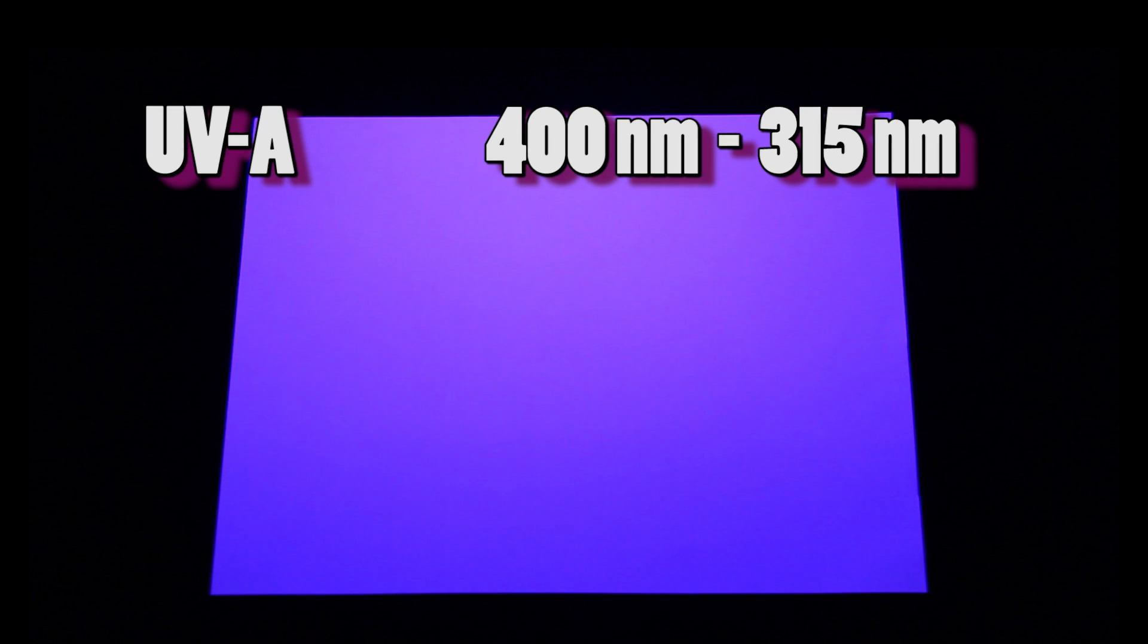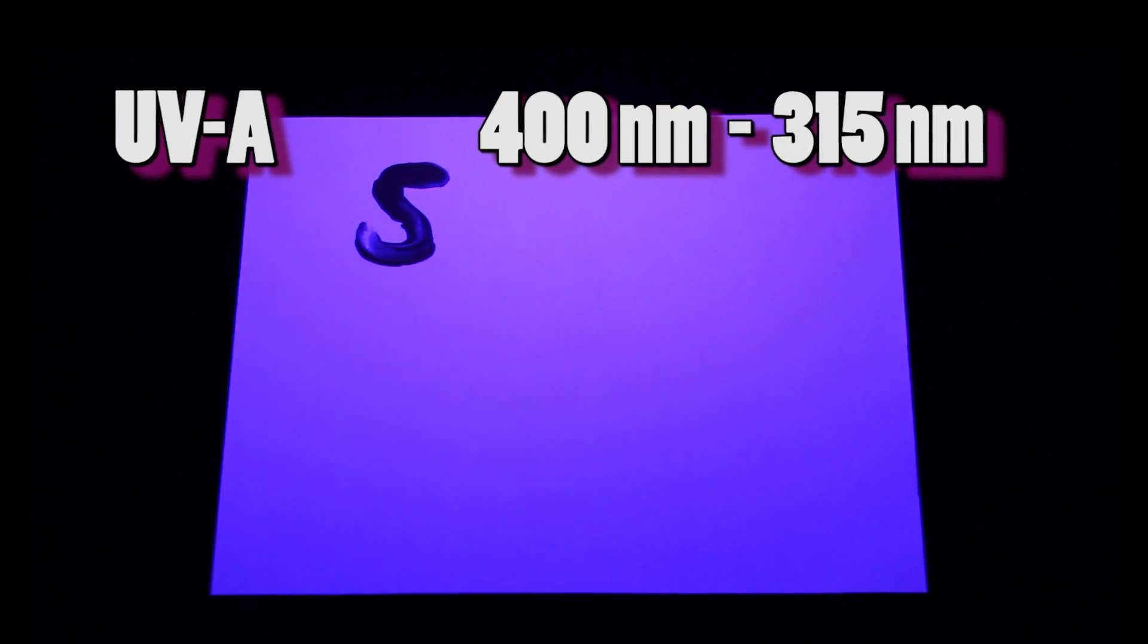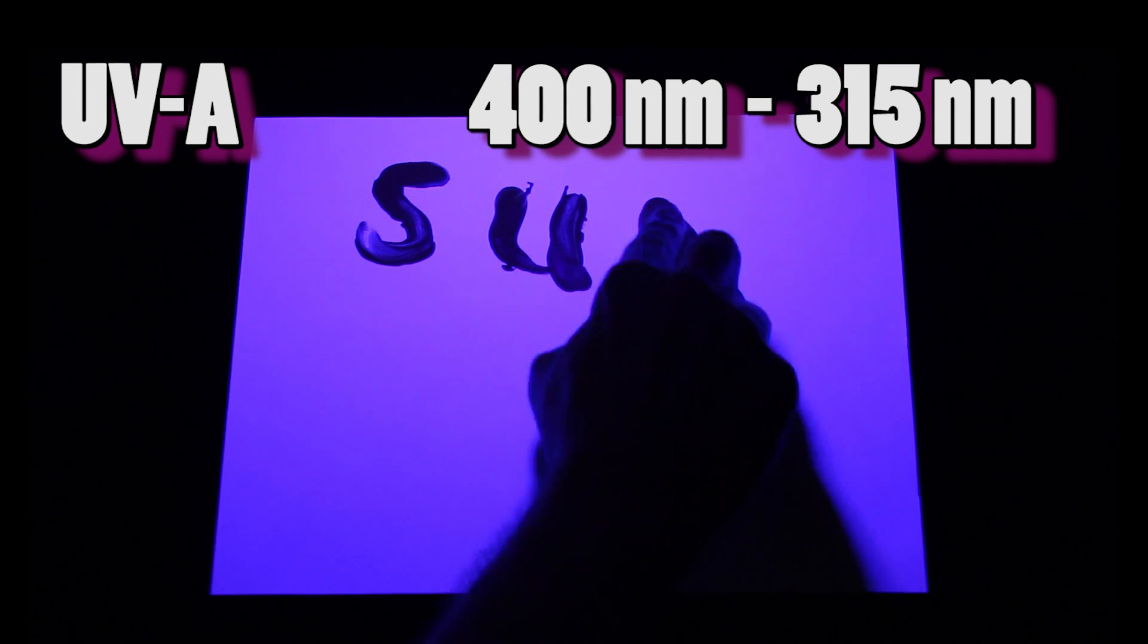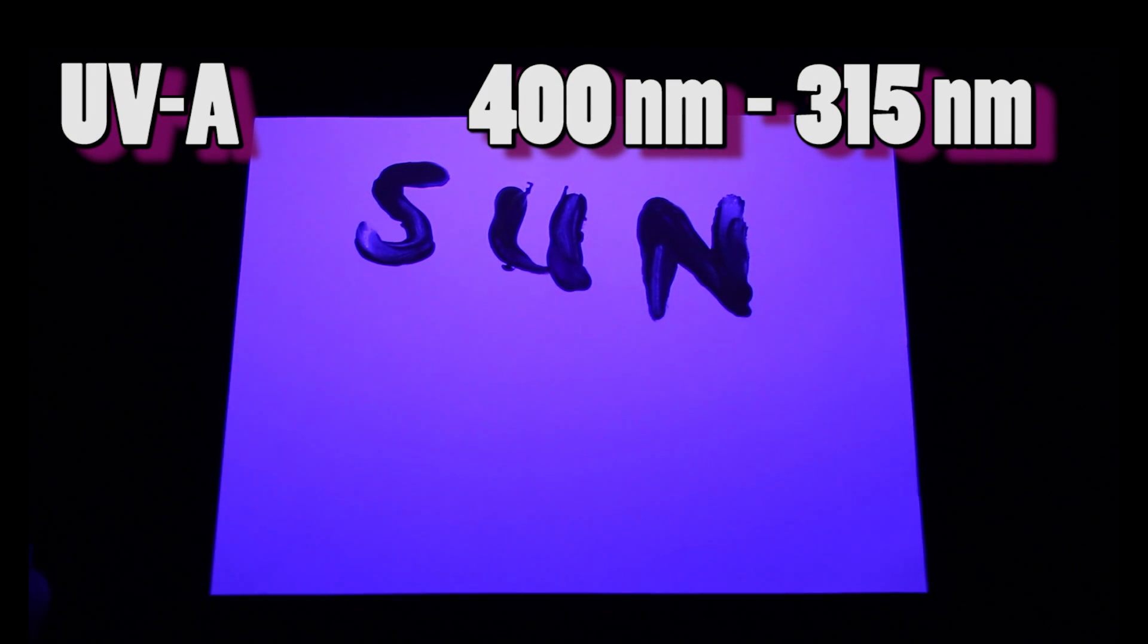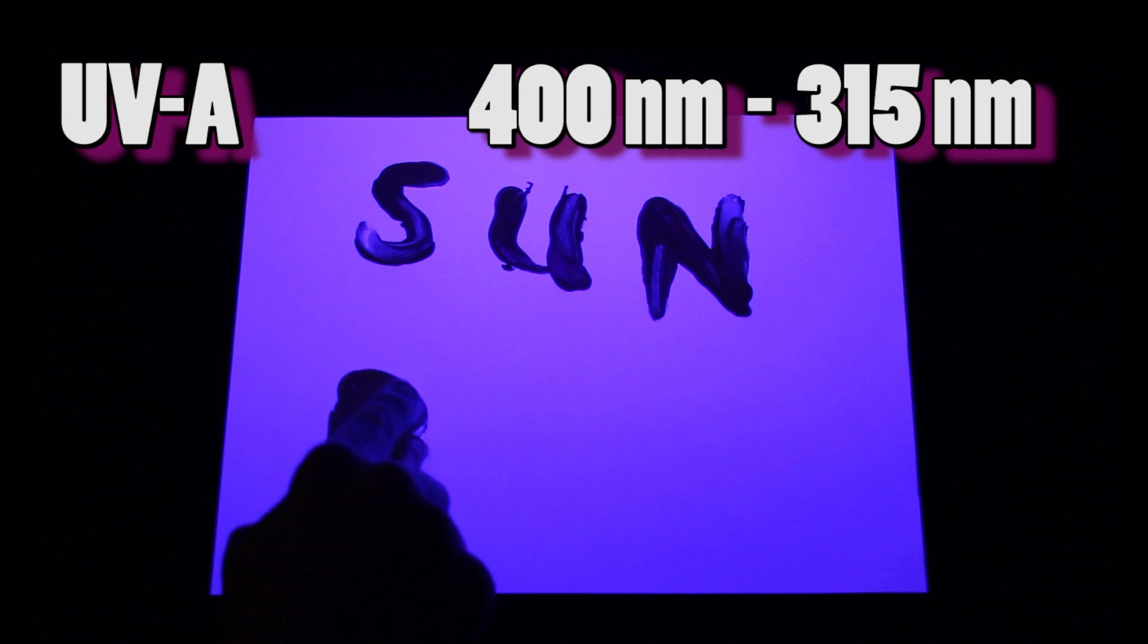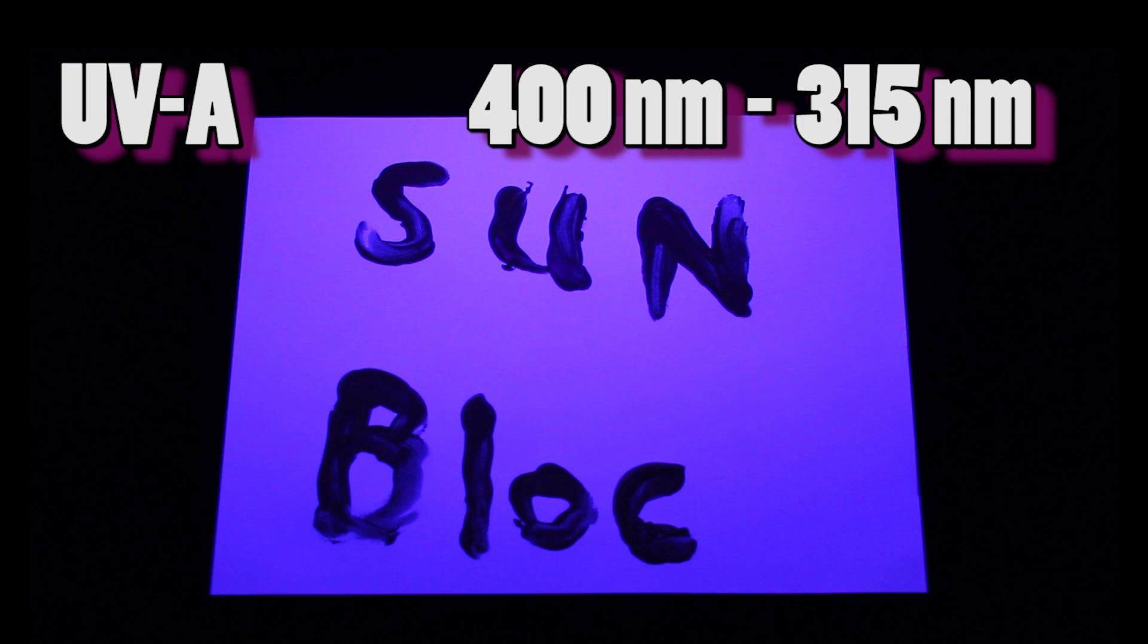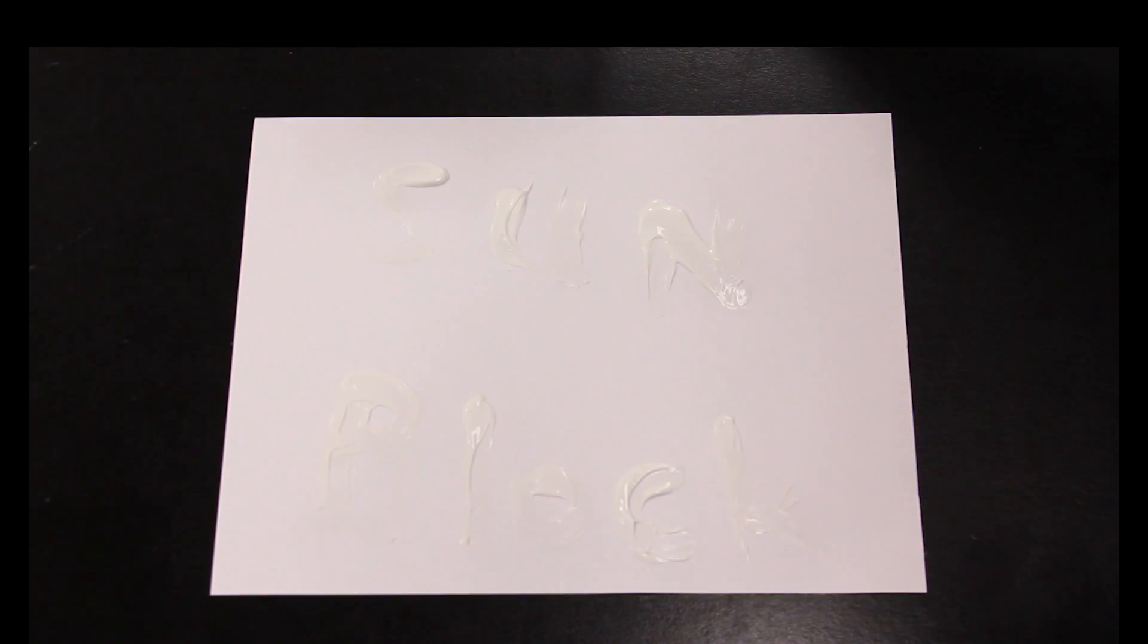Then there is UVA. This is the ultraviolet in black light. And this is the type that is not blocked by glass. Unlike UVB, UVA penetrates deep into the skin and causes damage beneath the surface. Along with UVB, UVA is the type that causes the most skin cancer. Therefore, we cannot rely on glass alone to protect us from UV light. We need sunblock.